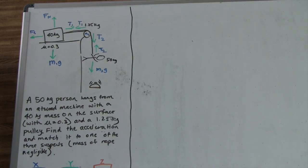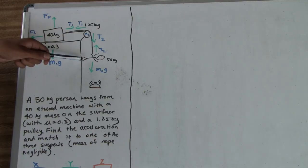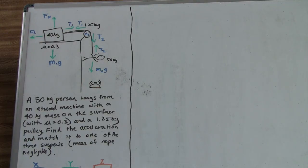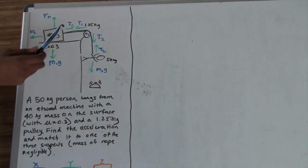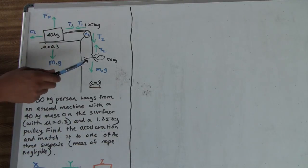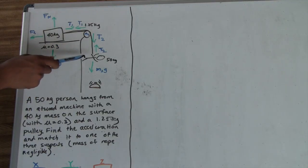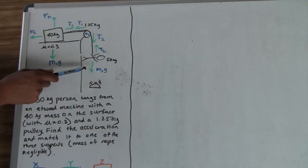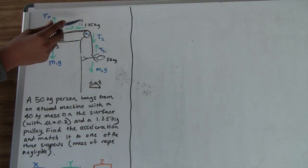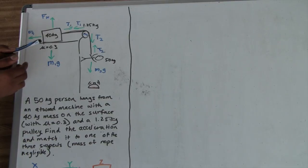The givens for this problem are: the mass of the block, which is 40 kg; the mass of the person, which is 50 kg; and the mass of the pulley, which is 1.25 kg. The forces acting on this Atwood machine include the force of friction and tension on the box, the normal force and weight of the box, tension pulling the person upwards while his weight pulls him downwards, and two tension forces on the pulley — one towards the box and one downwards towards the person.